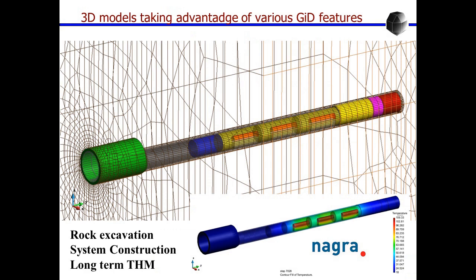We are using the models and parameters for large scale calculations. For instance, here you can see a tunnel in which excavation of the rock has been carried out and then installation of the different components including three heaters representing the waste disposal have been installed. Then heating starts and water flow and deformations are modeled. This is what we are doing for the Swiss agency of nuclear waste disposal, NAGRA.